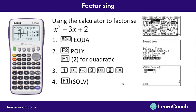The calculator will come up with an answer screen showing two values for x — this solves the equation when it equals 0. For factorizing, we need one more step: write brackets with x at the start of each, then put the opposite of each answer in the brackets. In this case, x equals 2 gives x minus 2, and x equals 1 gives x minus 1. If the answers were negative, we'd write x plus that number. Whatever the answer, make it opposite and put it in brackets with x.